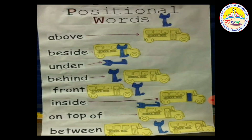These positional words tell where something is. All the positional words we have seen, we call preposition. A preposition is a word or phrase used before a noun or pronoun to show place, time and direction.